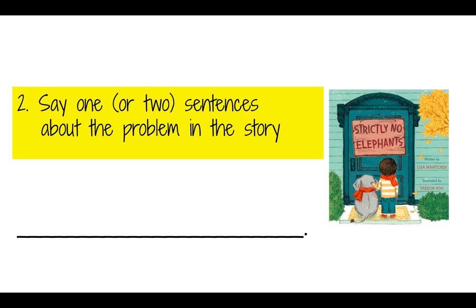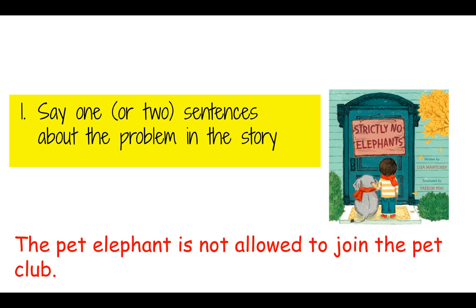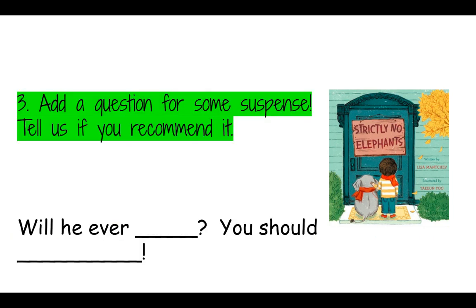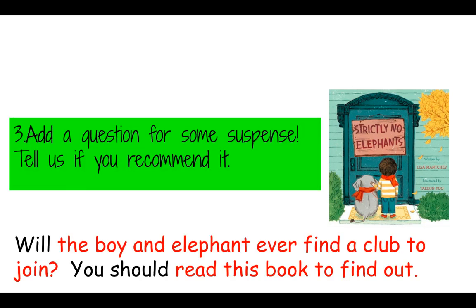Let's move on to the second part. Now we're going to say one or maybe two sentences about the problem in the story. Go ahead, say it out loud. Did you say the pet elephant is not allowed to join the pet club? That's right, that was the big problem in the story. Let's move on to our final step — we're going to add a question to build some suspense. And don't forget to tell us if you recommend it or not. Did you say: Will the boy and elephant ever find a club to join? You should read this book to find out. Maybe you didn't enjoy this book, so you would say you should not read this book to find out.